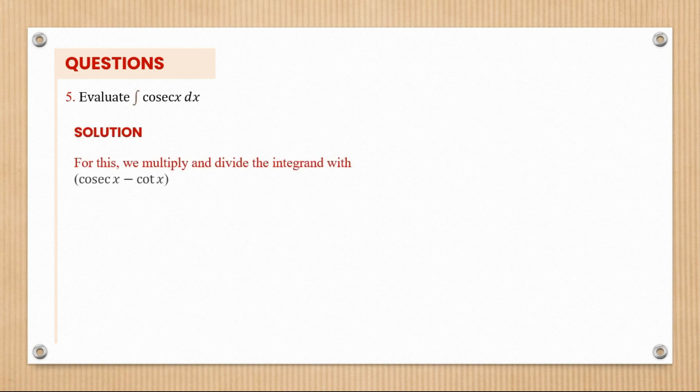In this case, we're going to multiply and divide the integrand with cosec x minus cot x. This has been researched and is the best way to work out this integral, so just trust me in this case.